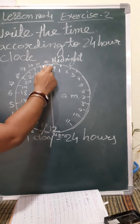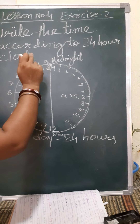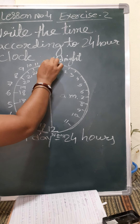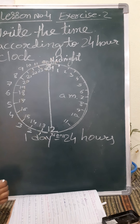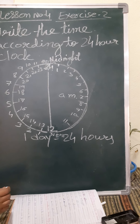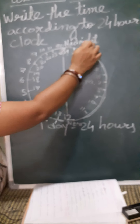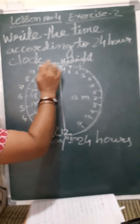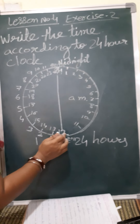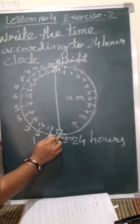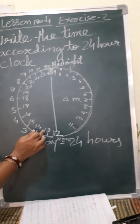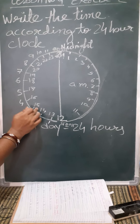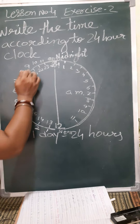At night, 24 hours complete. That is called 00 hours — that is midnight. Now you understand how to read the 24-hour clock. After 12 noon, 1 is read as 13, 2 as 14, and like this it goes.